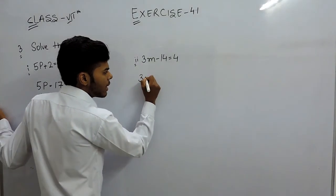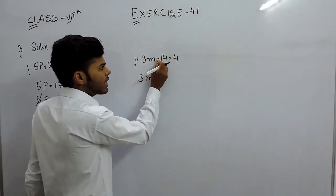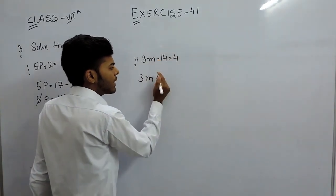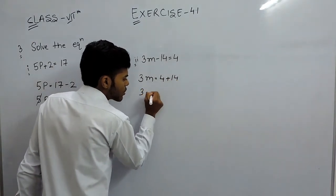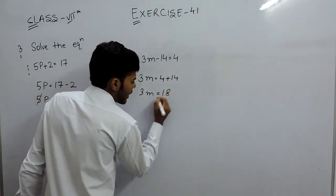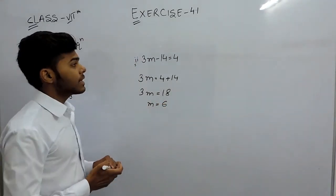Now in this equation, 3m is the variable, so let it be on the left hand side, minus 14. When shifted on the right hand side it becomes plus 14. So 4 plus 14, 3m equals 18 and m equals 6. So this is the simplest question in this exercise.